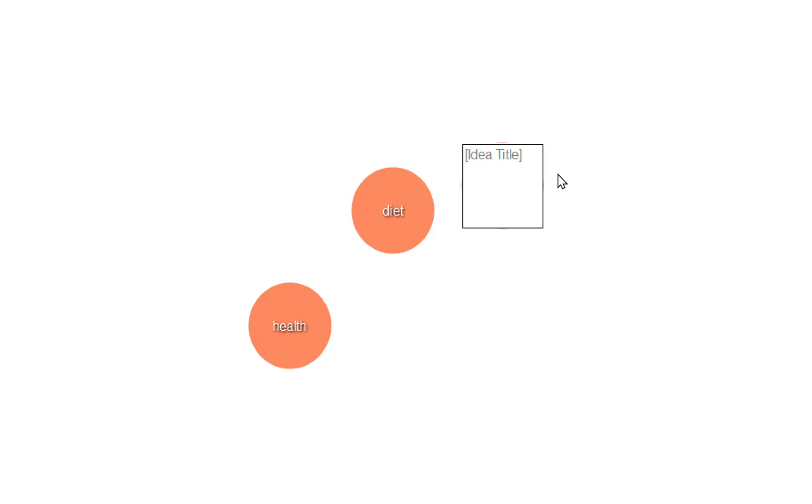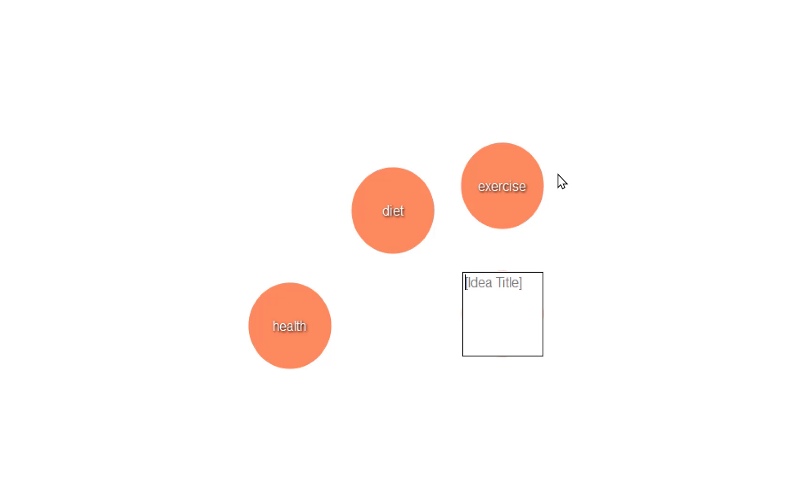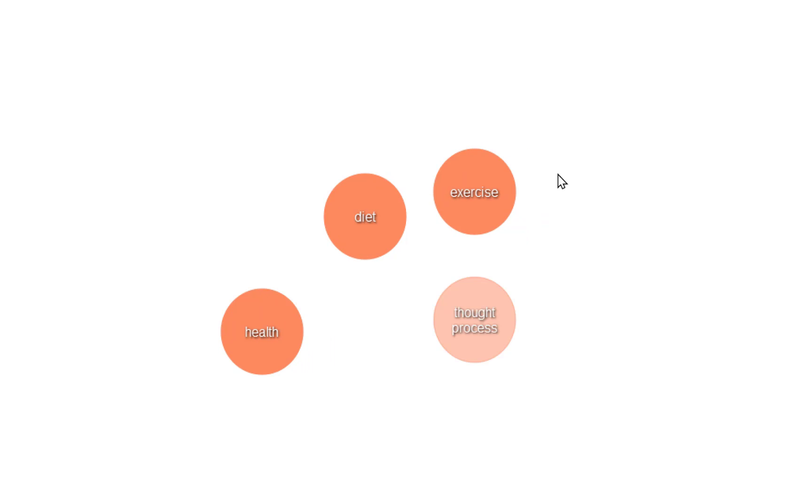Let's pop something in. I'll put in something general and work off it. I've got 'Health' — I'm going to tap off that, so I've now got my main idea to work with. When I tap off it, it gives me another option to add another idea, so I'm going to put 'Diet' in, tap off it to create another one, and add a couple more. So we've got some ideas to work with now.